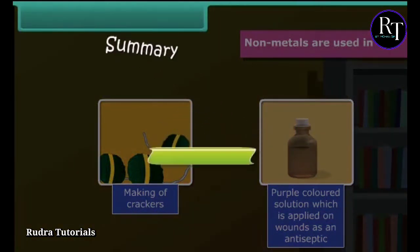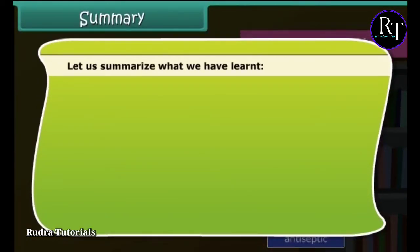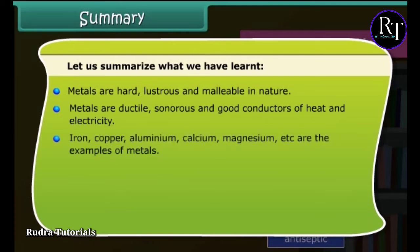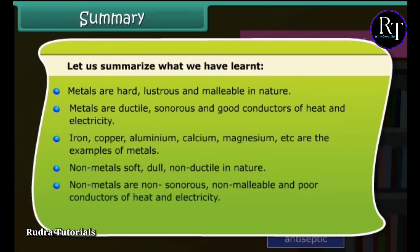Let us summarize what we have learnt. Metals are hard, lustrous, and malleable in nature. Metals are ductile, sonorous, and good conductors of heat and electricity. Iron, copper, aluminium, calcium, magnesium, etc. are examples of metals.